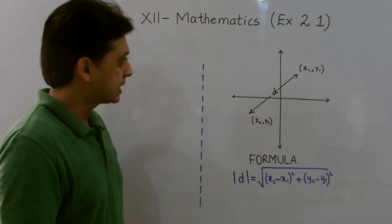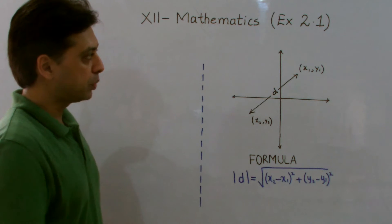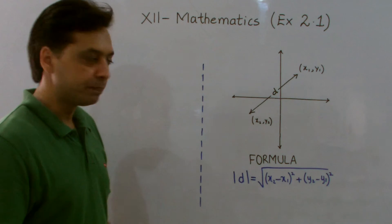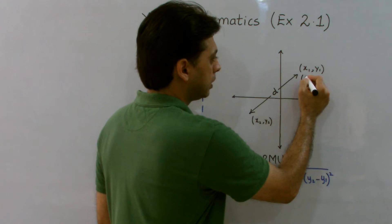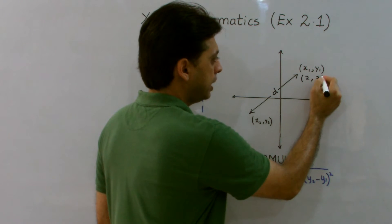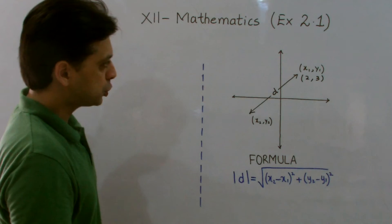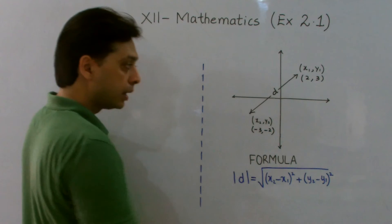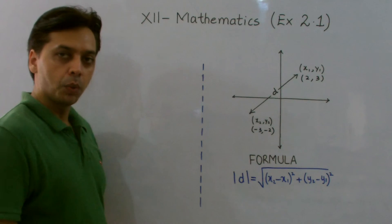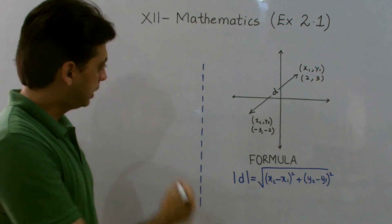So, let's consider certain values against x1, y1 and x2, y2. I consider x1, y1 equals to 2, 3 and I suppose x2, y2 equals to minus 3, minus 2. Now, what's the proper way to solve it? Let's have a look.